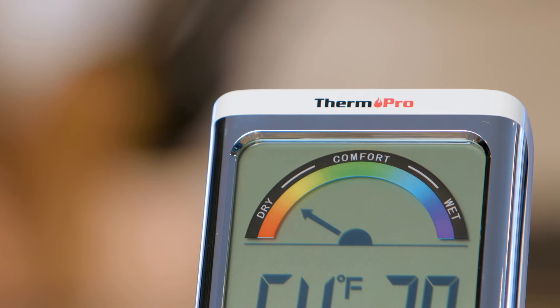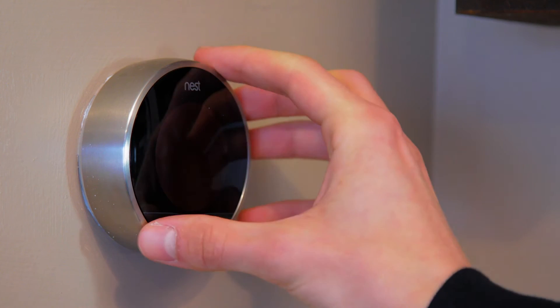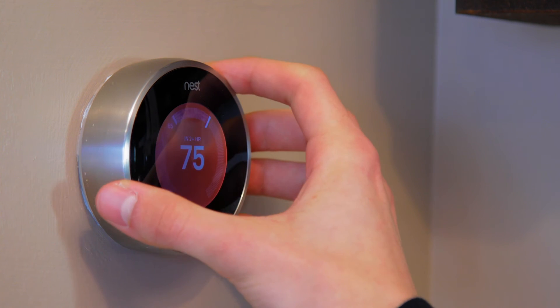A vibrant color air comfort indicator assesses air quality conditions and visually displays your home's comfortability on a 3.3 inch screen to allow you to make informed, necessary adjustments such as adjusting your thermostat.